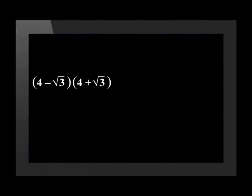It is easy to multiply these two expressions together because they are the result of a difference of two squares. This means that 4 minus the square root of 3 times 4 plus the square root of 3 is equal to 16 minus 3, which is 13. Let's apply this to our problem.